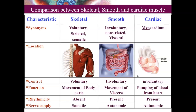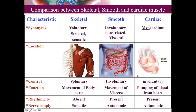Comparing the three types: skeletal muscle is voluntary because its contraction is under our own control, whereas smooth and cardiac muscles are involuntary. Skeletal muscles are called striated due to striations visible microscopically; smooth muscles are non-striated and cardiac muscles are faintly striated. Skeletal muscles are also called somatic muscles because they develop from somites. Another name for cardiac muscle is myocardium. The nerve supply of smooth and cardiac muscle is autonomic, while skeletal muscle is supplied by somatic nerves.